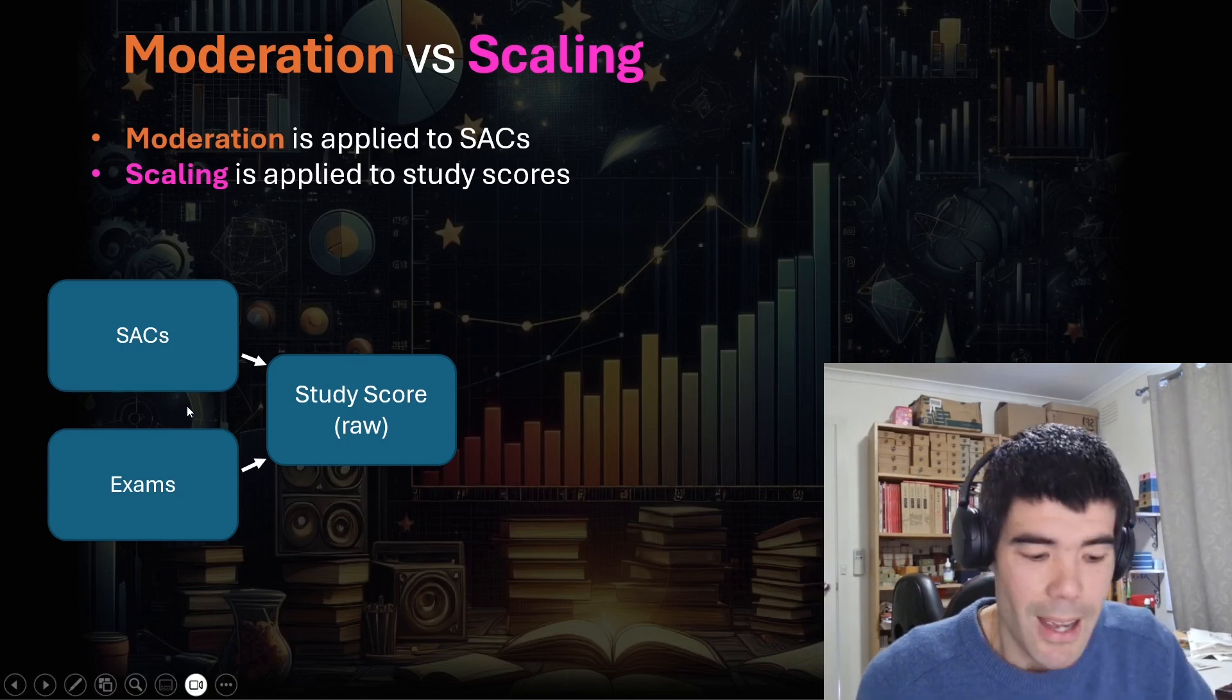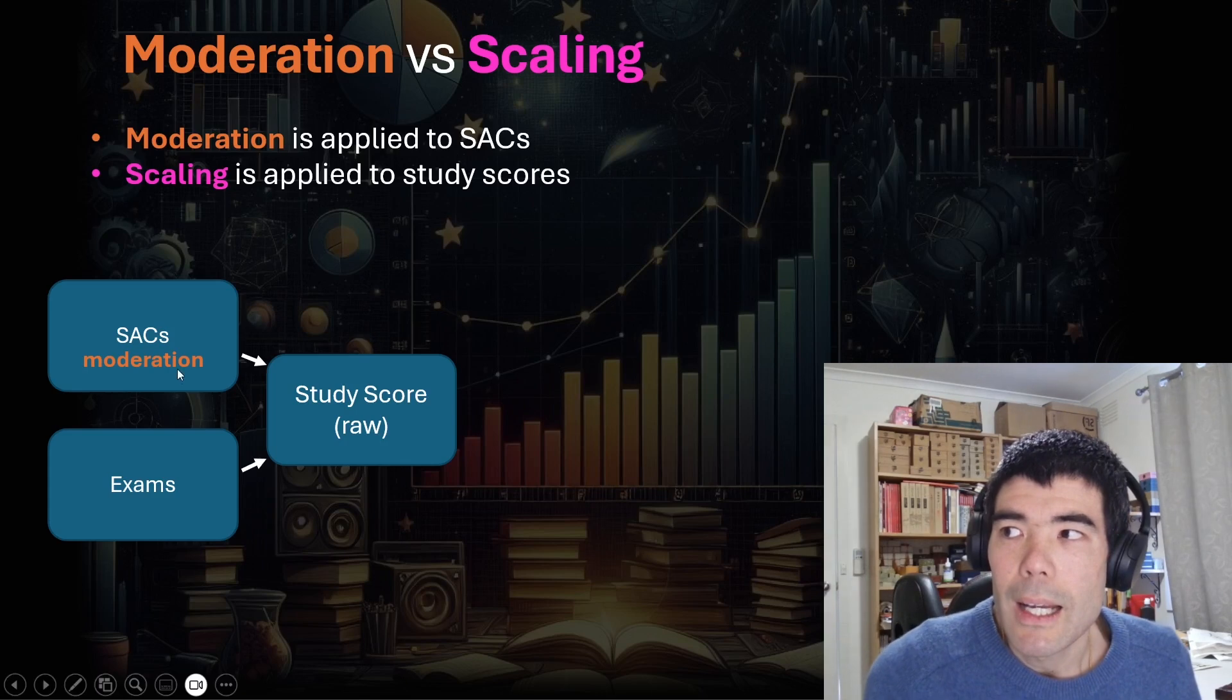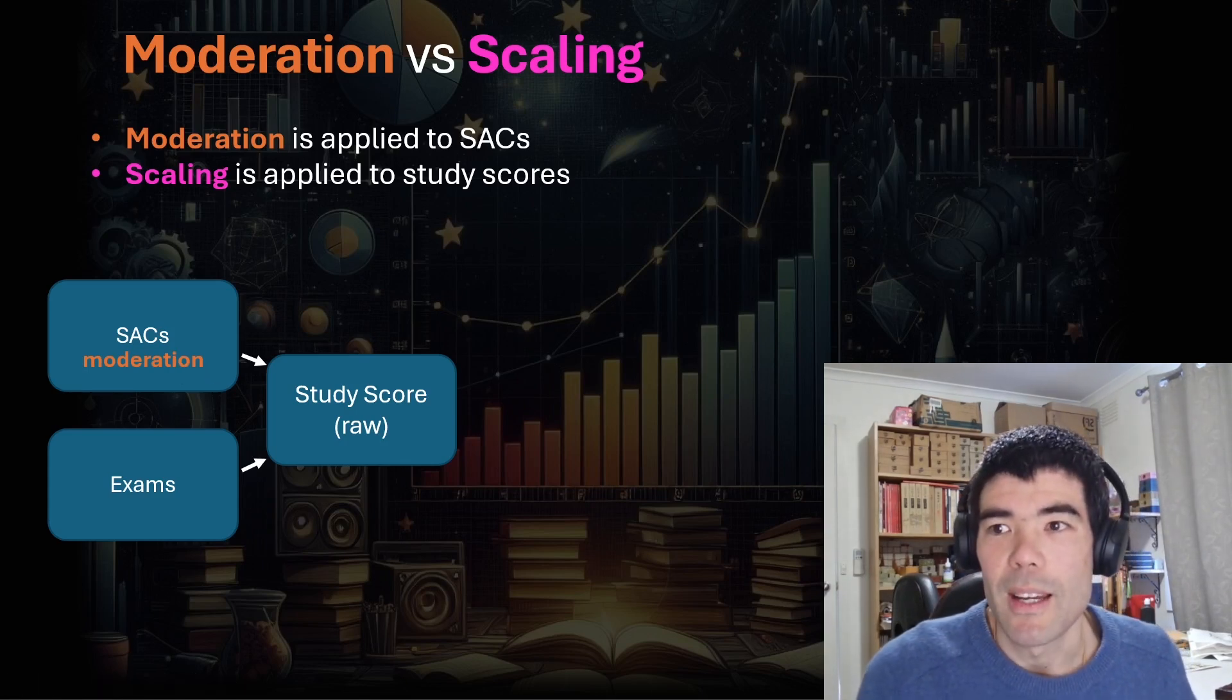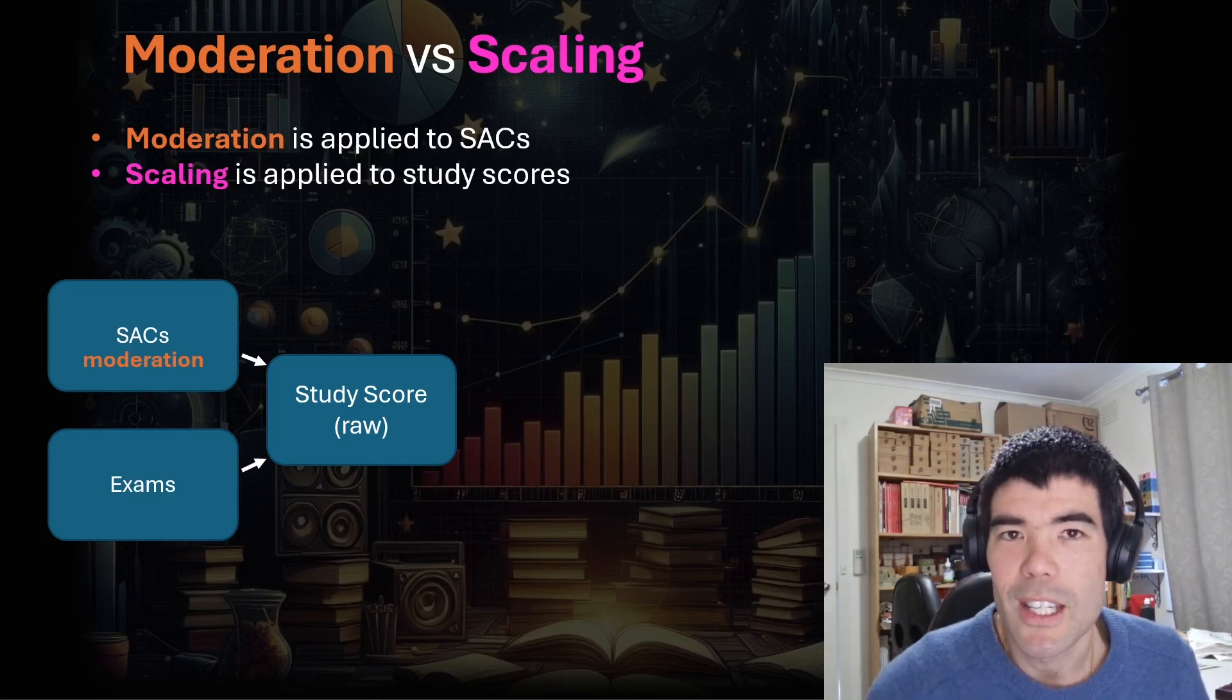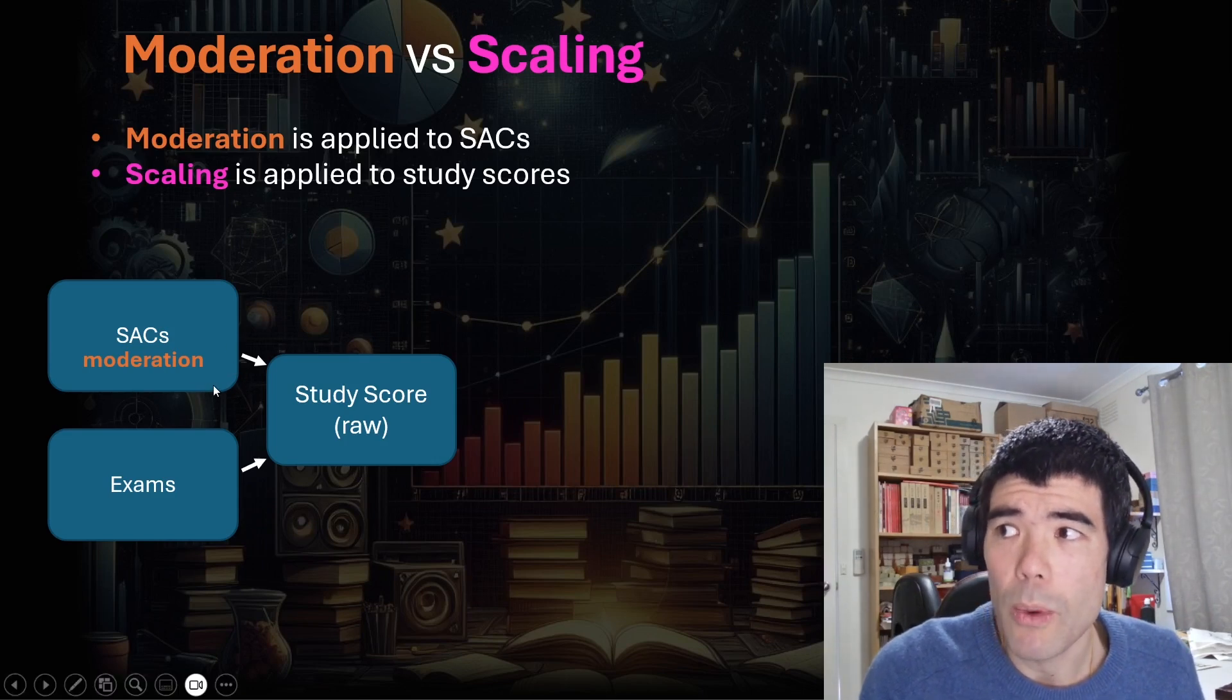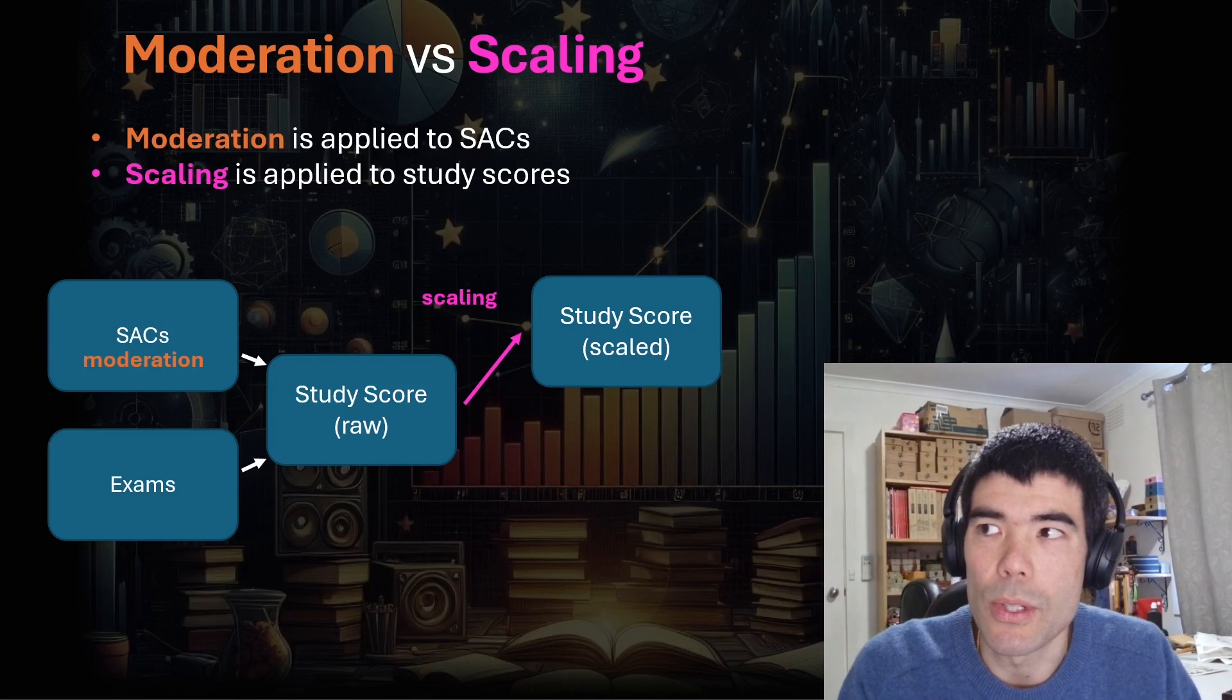But with the SACs, every student is sitting at different schools or sitting different SACs. So the VCAA need a way to adjust the SACs to make it fair. So for example, me as a teacher, I can't set a really easy SAC for my students and help them do better because, of course, teachers want their students to do well.